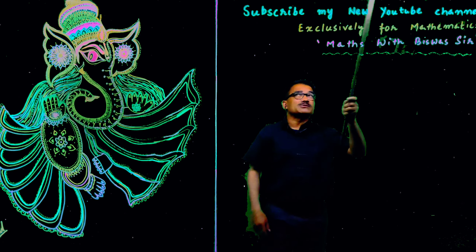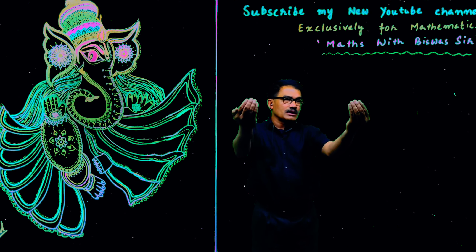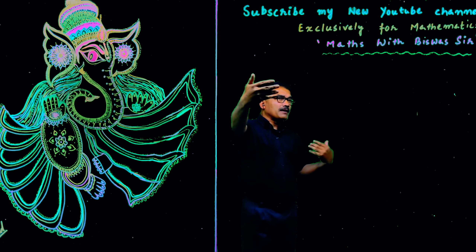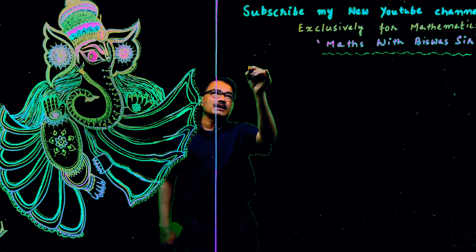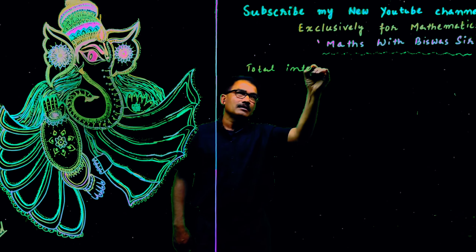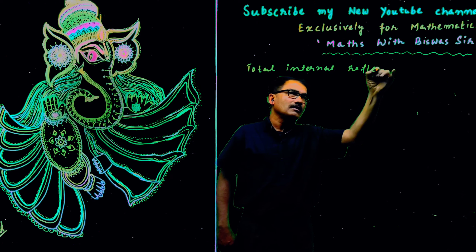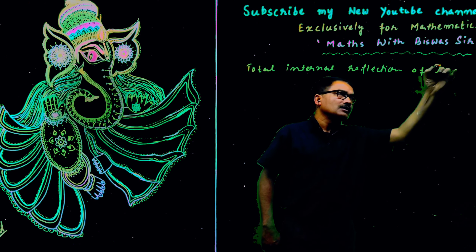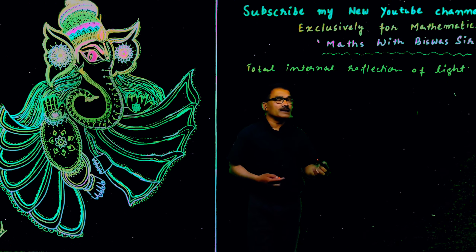The glass board has a glass, and all around it there is LED. The LED throws light into the glass, and from the glass the light goes to the air medium. But there is a phenomenon called total internal reflection of light, and this phenomenon is behind the working of this glass board.